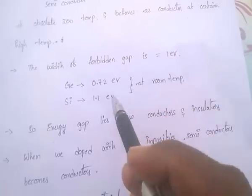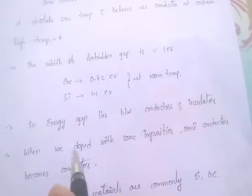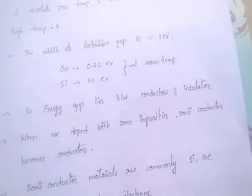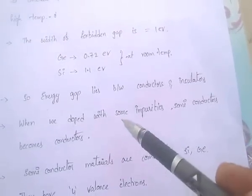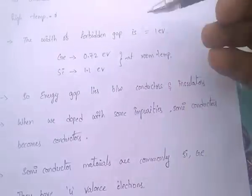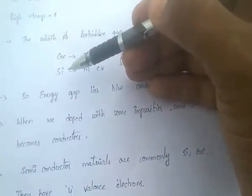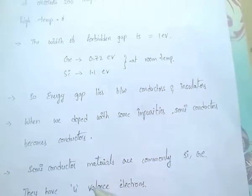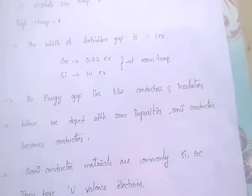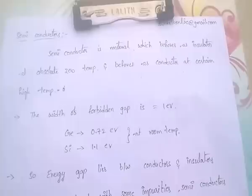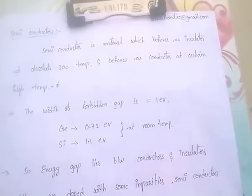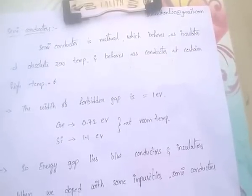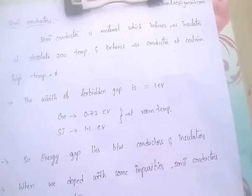The energy gap of semiconductors lies between conductors and insulators. When doped with some impurities, semiconductors can become conductors. The most common semiconductor materials are germanium and silicon, both of which have four valence electrons. The width of the forbidden gap for semiconductors is one electron volt.